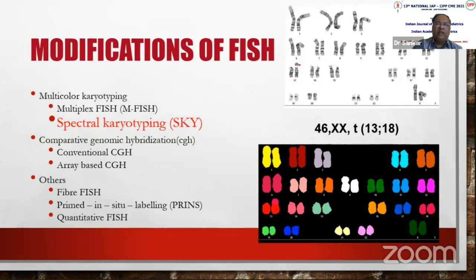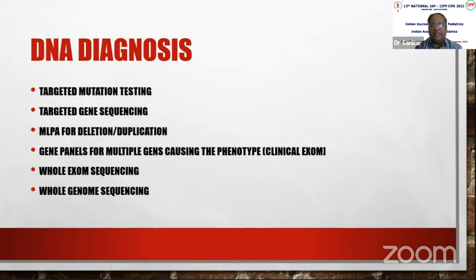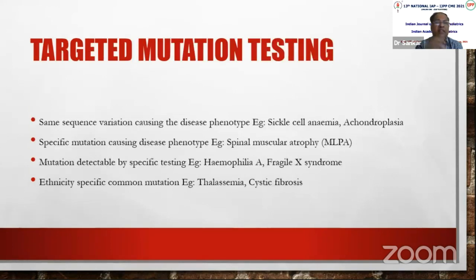Moving to molecular methodology: DNA extraction, PCR amplification, sequencing, and other methods are used for single-gene disorders like spinal muscular atrophy and thalassemia. When the mutation is known, targeted mutation testing is performed. Alternatively, targeted gene sequencing, MLPA for deletions and duplications, gene panels for multiple genes causing a given phenotype, or advanced whole exome or whole genome sequencing by NGS can be applied when the specific gene is unknown.